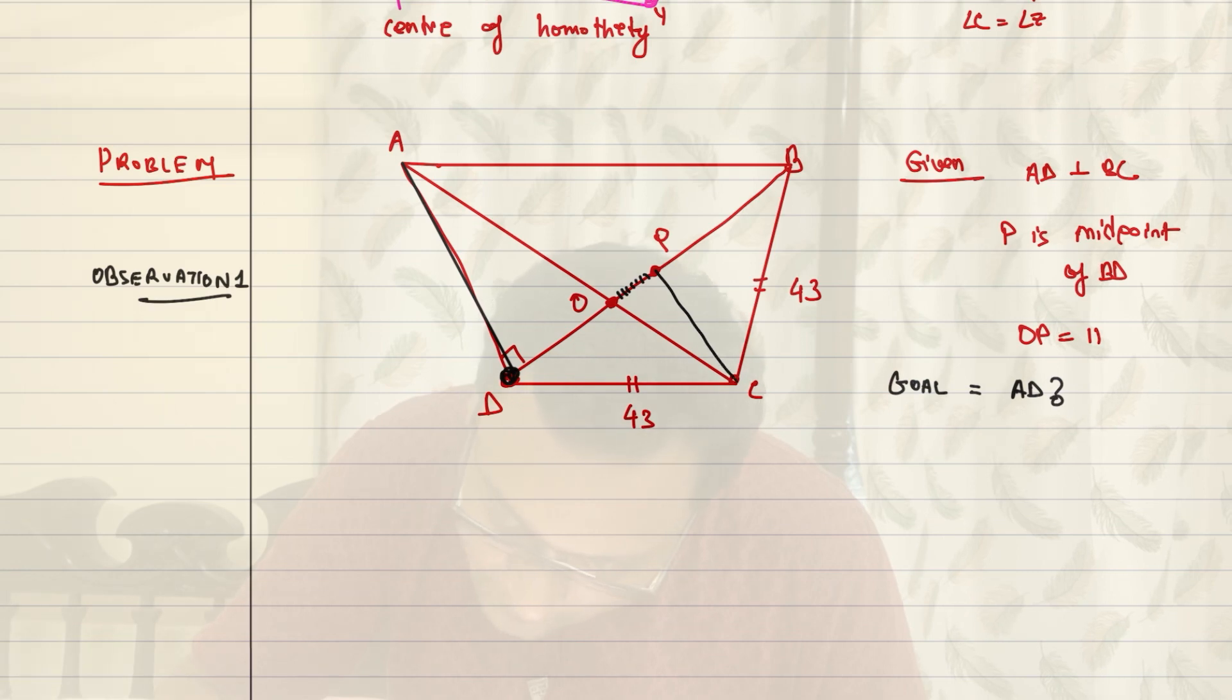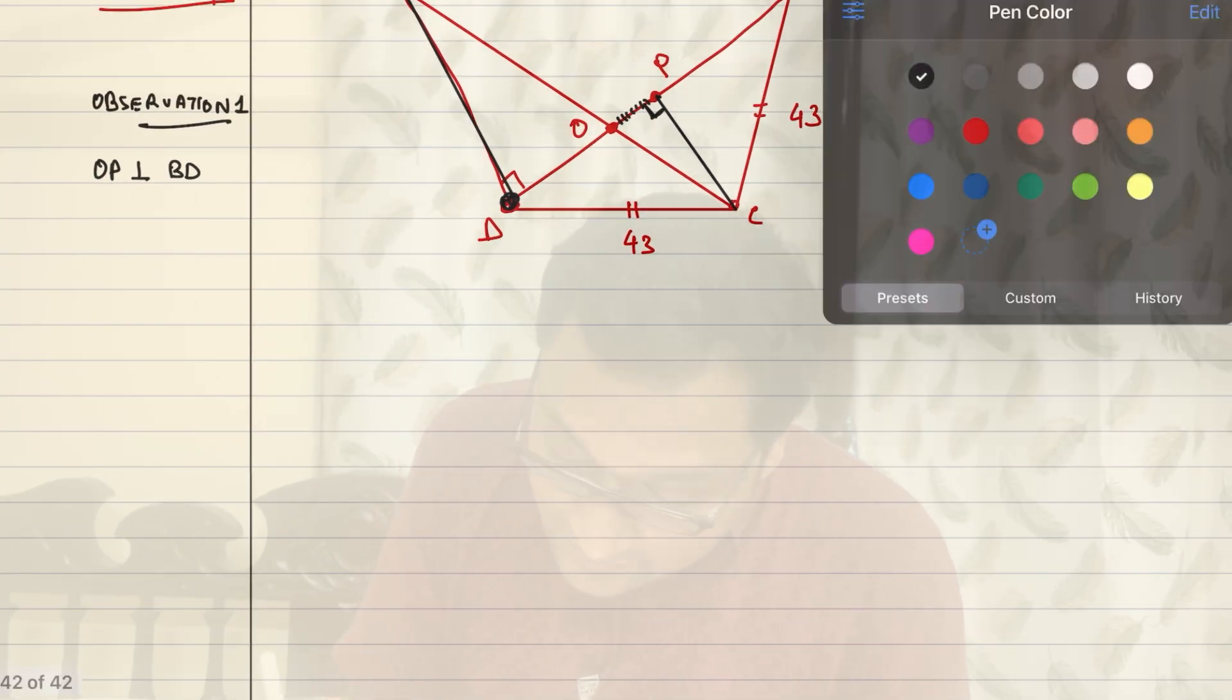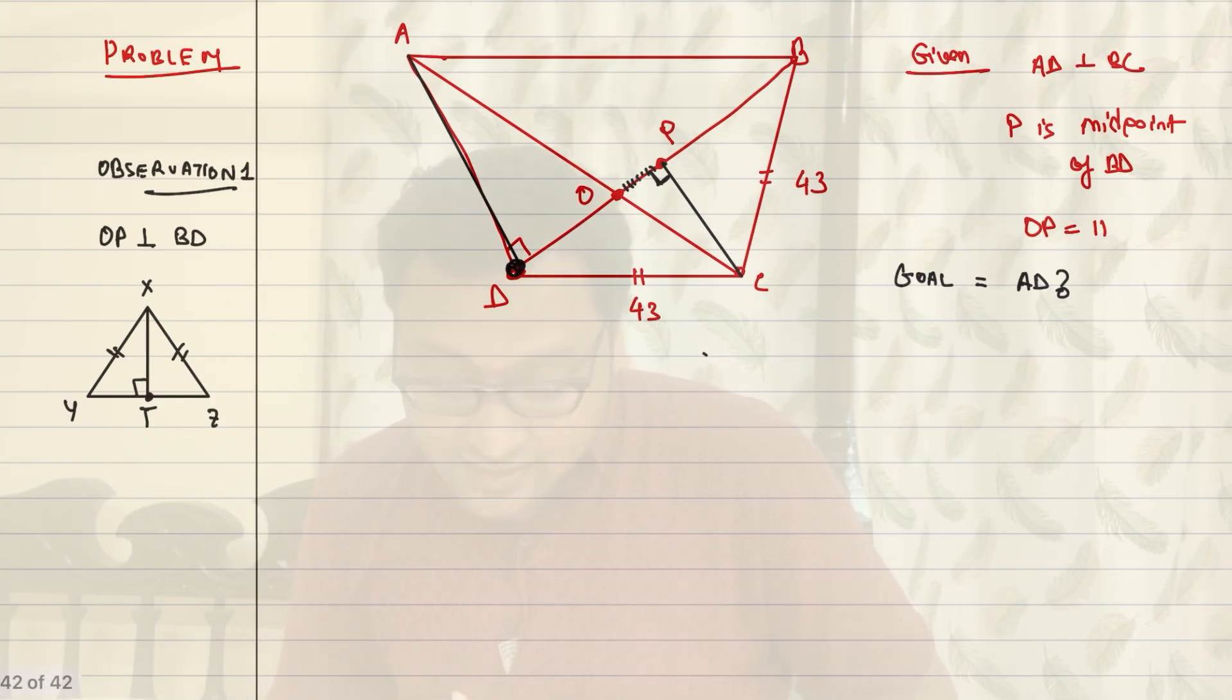One of the observations was, that if you join OP, it would be perpendicular to BD. OP is perpendicular to BD. Why is that? Well, this is because P is the midpoint of BD. And BCD is isosceles, 43 and 43. So, OCP is the line joining the vertex to the midpoint of an isosceles triangle. In an isosceles triangle, if you have an isosceles triangle XYZ, then if you join X to the midpoint of YZ, then this will be perpendicular. That's exactly what's happening here. That's first observation.